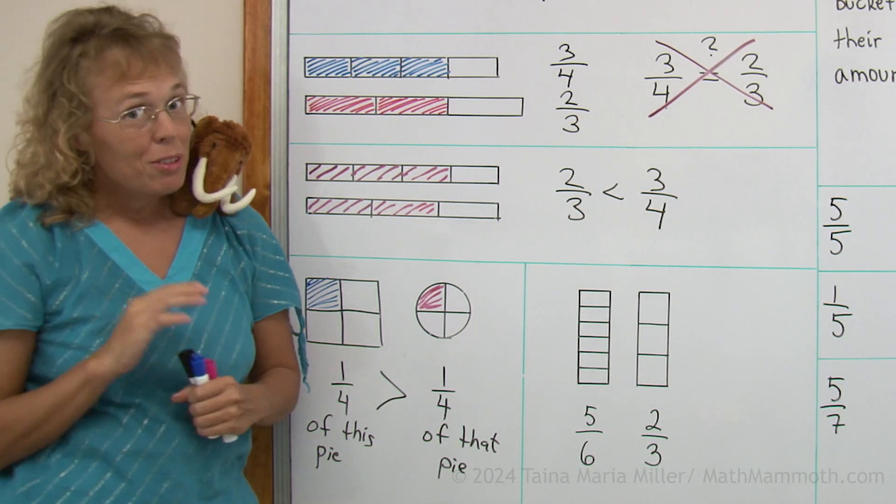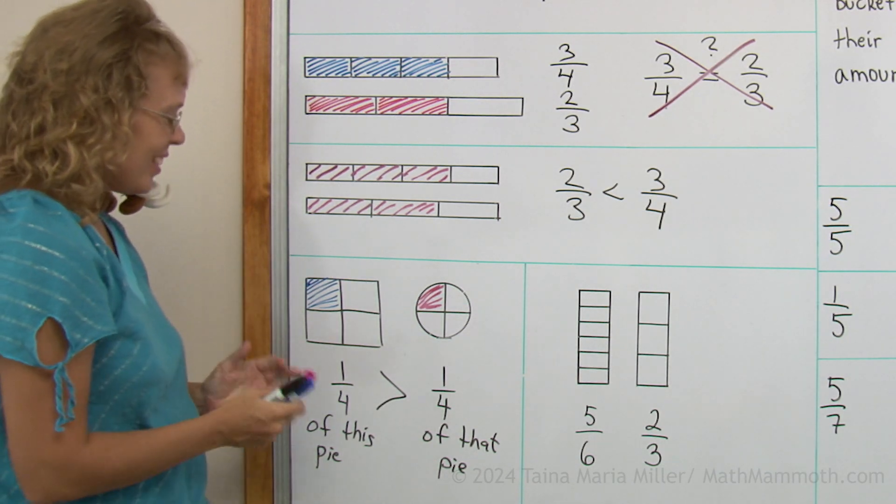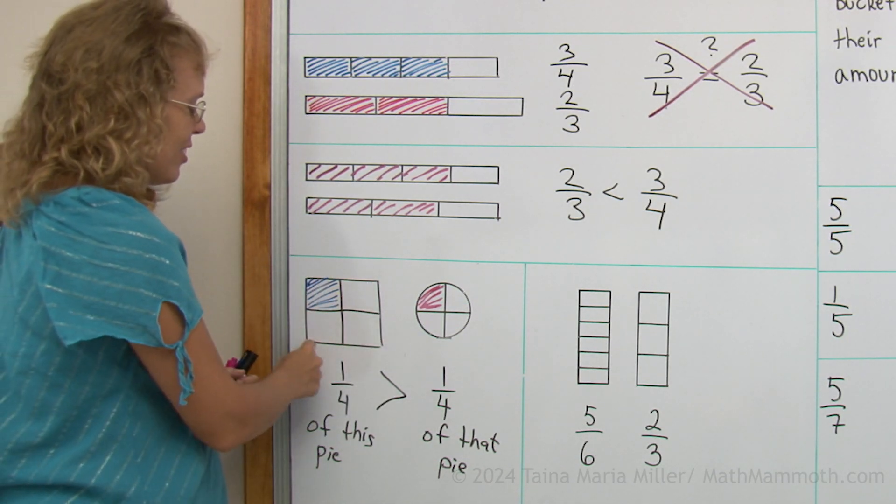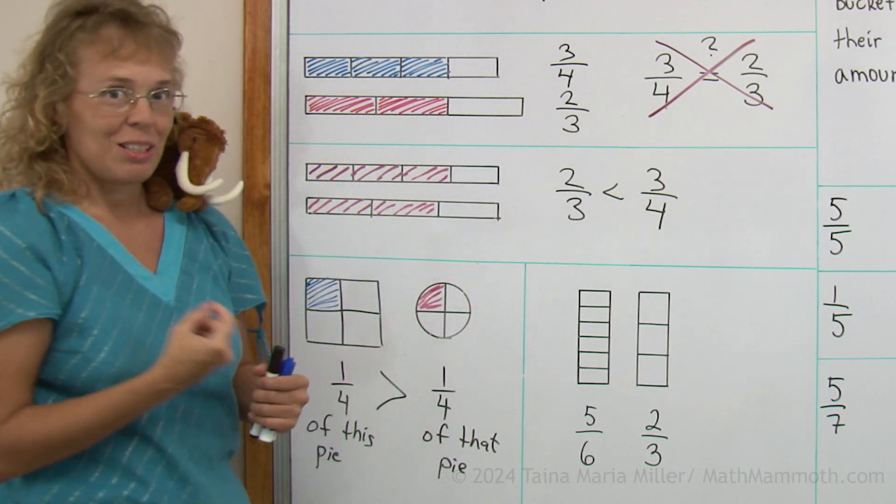But if we had some different pictures, we might have one-fourth equals one-fourth, right? It depends whether your whole, these whole things, are the same size or not.